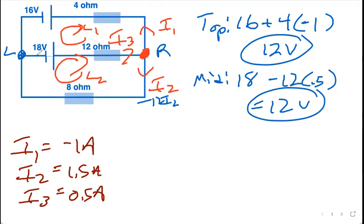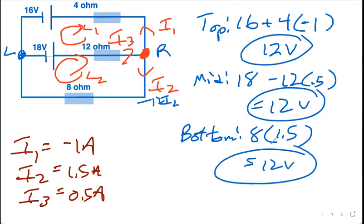Going down the bottom one, I'm going to go against i2 from left to right, so I'm going to gain 8 i2. So on the bottom I'm going to gain 8 times i2 is 1.5, which is 12 volts.